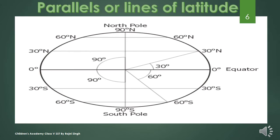The equator is at 0 degrees, and the other parallels are marked from 0 to 90 degrees, with parallels north of the equator denoted by N and parallels south denoted by S. The north pole is written as 90° North and the south pole as 90° South. There are 90 parallels in the northern hemisphere and 90 in the southern hemisphere, and all parallels are drawn at an interval of 1 degree.